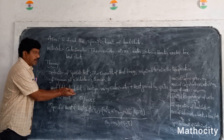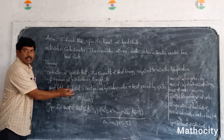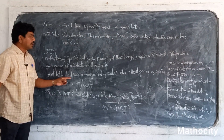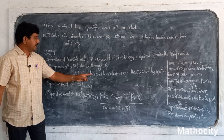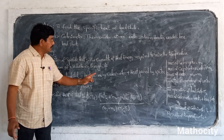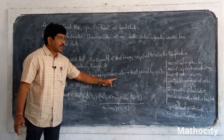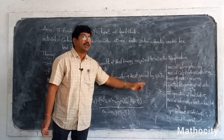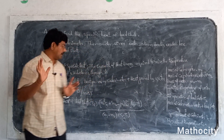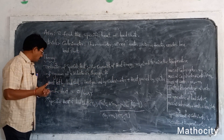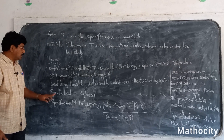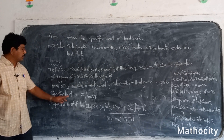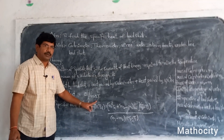What is the principle we are using? We are using heat lost by the lead shots. Lead shots are losing the heat and heat is gained by the calorimeter, and at the same time heat is gained by the water inside the calorimeter. We derived the specific heat formula: Q by M delta T.